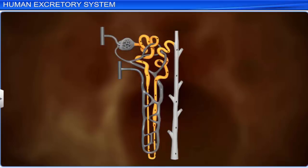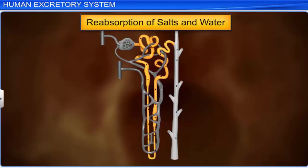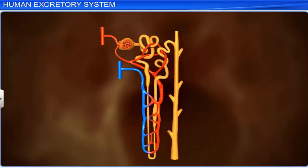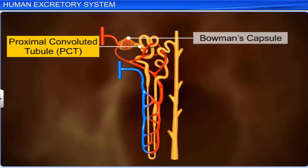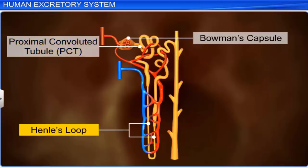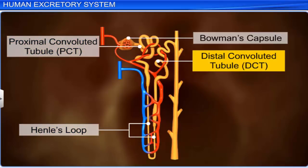The other part of the nephron, the renal tubule, helps in the reabsorption of salts and water as the urine passes through it, thereby concentrating the urine. The renal tubule begins with the Bowman's capsule and consists of the proximal convoluted tubule (PCT), Henle's loop, and the distal convoluted tubule (DCT).